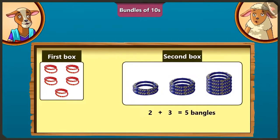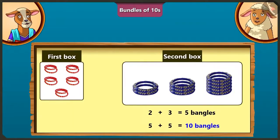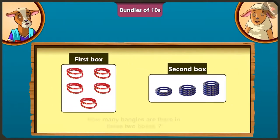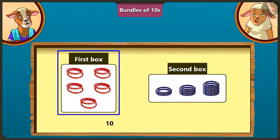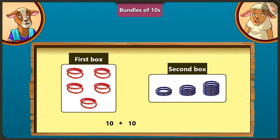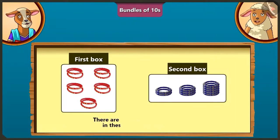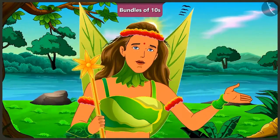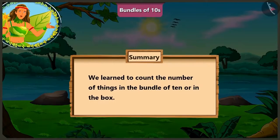Now, I will count the second box the same way. Okay, you count. There will be five bangles if we add two bangles of the first row and three bangles of the second row. And if we add five bangles of the third row to these five bangles, then there will be total ten bangles in the second box. So, there are ten bangles in total. Oh, wow! Absolutely right! Now, tell me, how many bangles are there in these two boxes? There are ten bangles in the first box and ten bangles in the second box. If we add ten and ten, there will be twenty. So, there are total twenty bangles in these two boxes.